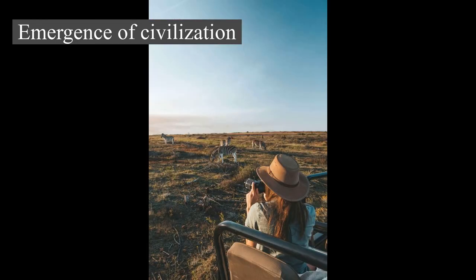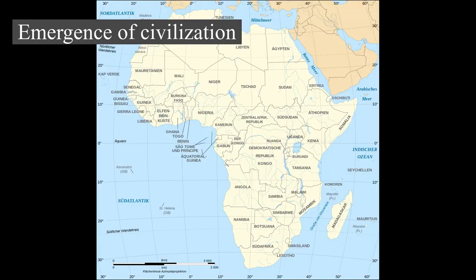Later, gourds, watermelons, castor beans, and cotton were also collected. Sorghum was first domesticated in eastern Sudan around 4000 BC, in one of the earliest instances of agriculture in human history. Its cultivation would gradually spread across Africa before spreading to India around 2000 BC.